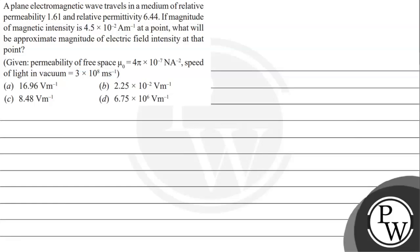Hello, let's read the given question. The question says a plane electromagnetic wave travels in a medium of relative permeability 1.61 and relative permittivity 6.44. If magnitude of the magnetic intensity is 4.5 × 10⁻² ampere per meter at a point, what will be the approximate magnitude of electric field intensity at that point?